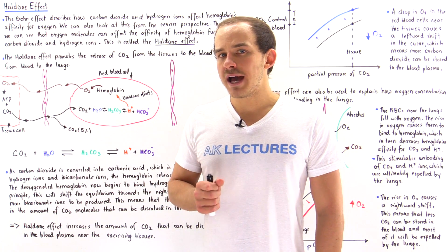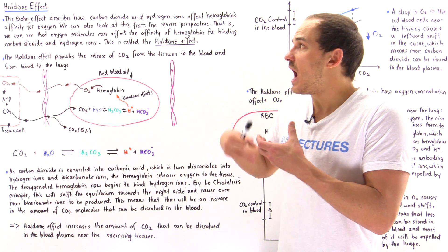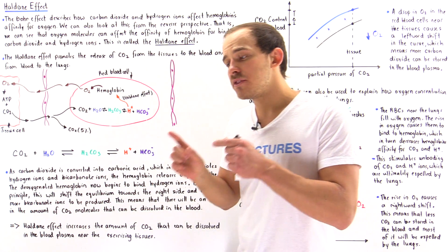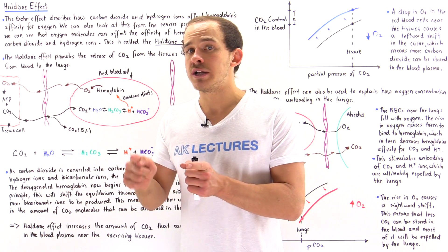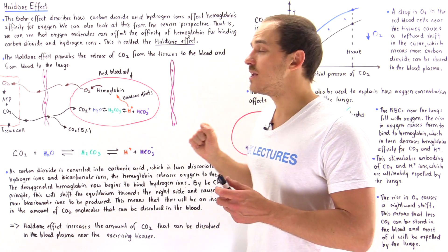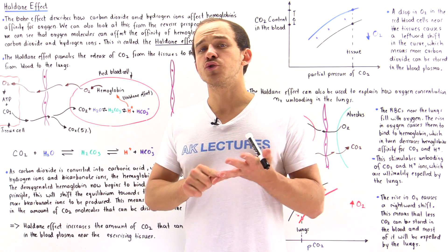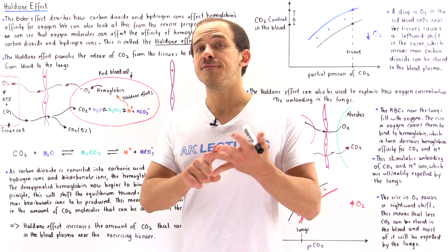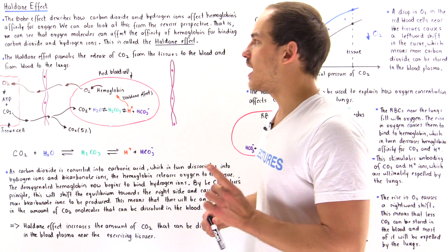Another equally important effect is known as the Haldane Effect, and the Haldane Effect is really the opposite — the reverse — of the Bohr Effect. While the Bohr Effect talks about how the concentration of CO2 and hydrogen ions affect hemoglobin's affinity for oxygen, the Haldane Effect takes the opposite perspective: it describes how the concentration of oxygen inside the red blood cell actually affects hemoglobin's affinity for carbon dioxide and H+ ions.